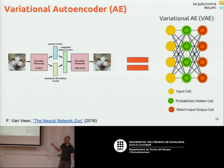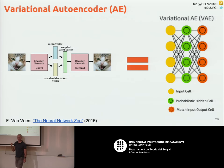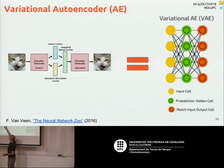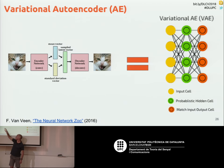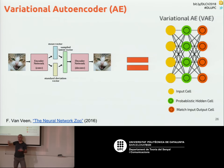A modification of the autoencoder is when you have an encoder but force the hidden representation in the middle to follow some statistics — typically a Gaussian distribution. There are tricks to do that. Once trained, you can remove the encoder, generate samples from a Gaussian distribution, feed them into the decoder, and that will generate new data. This is a generative model — a model to generate new data.